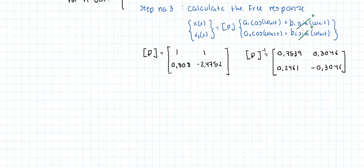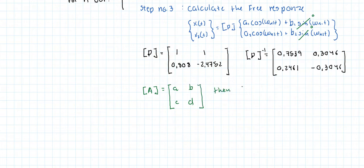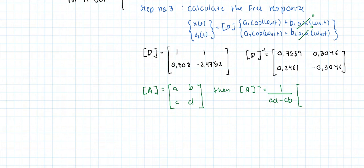Very quickly — if your calculator can't calculate the inverse of a matrix automatically, just know that if you have a matrix A equal to [A, B; C, D], then the inverse is equal to 1 over AD minus CB — this term is the determinant of the matrix — multiplied by the swapped matrix. Essentially we switch A and D and then multiply C and B by minus 1.